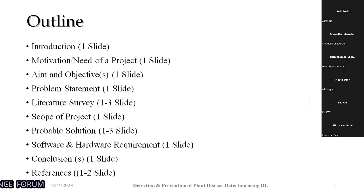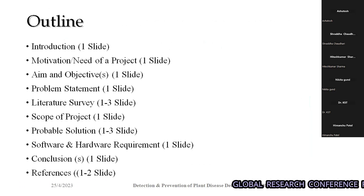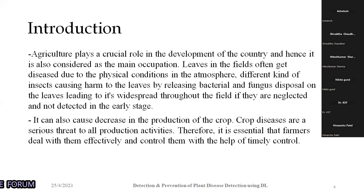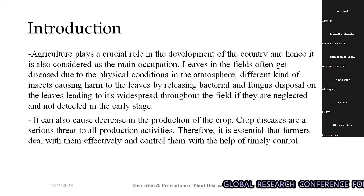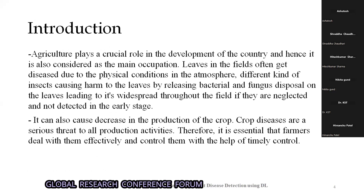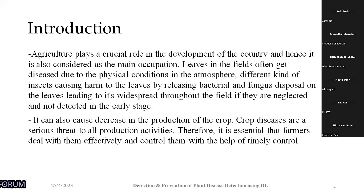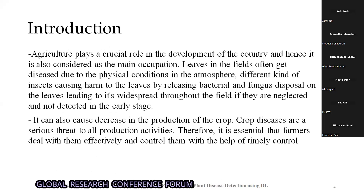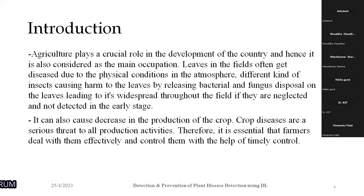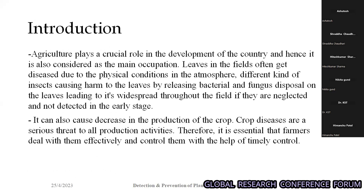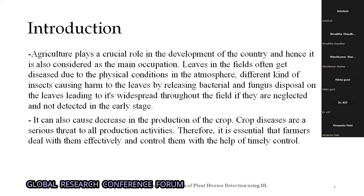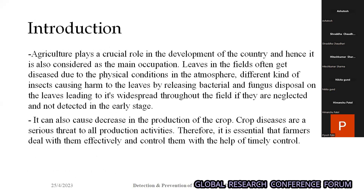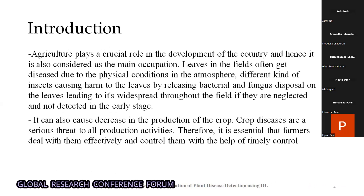Agriculture plays a crucial role in the development of the country and is considered the main occupation. India ranks second overall in the world in terms of agriculture, including rice and wheat. It is very important that India develops healthy crops so that the agricultural output ratio is maintained consistently and no loss occurs from the agriculture sector.